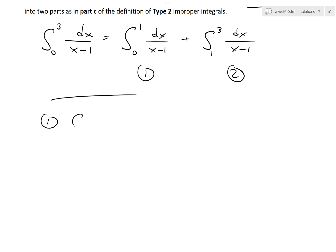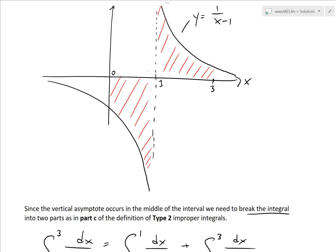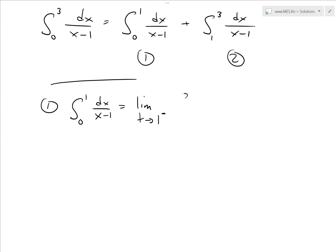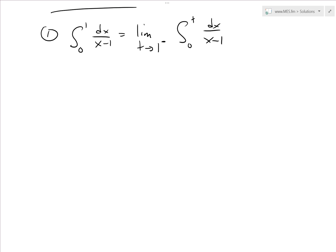Now we solve the first integral from 0 to 1. Recall from earlier videos on improper integrals, we write this as a limit. This is type 2 because of the vertical asymptote, so it's the limit as t approaches 1 from the left side — that negative sign means the left side — of the integral from 0 to t of 1 over (x minus 1) dx. The integral of 1 over (x minus 1) is natural log, so this equals the limit as t approaches 1 from the negative side of ln|x minus 1| evaluated from 0 to t.